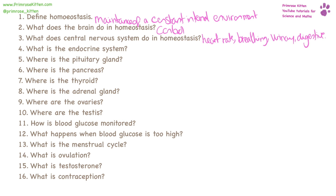What is the endocrine system? This is a collection of glands which release hormones, and hormones control a large number of things. They regulate metabolism, growth, development, tissue function, reproduction, sleep, and mood.